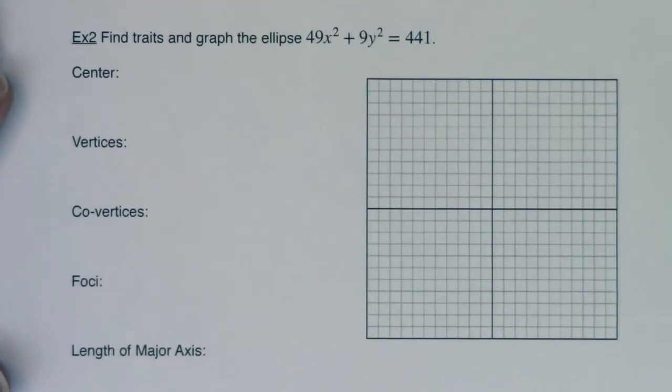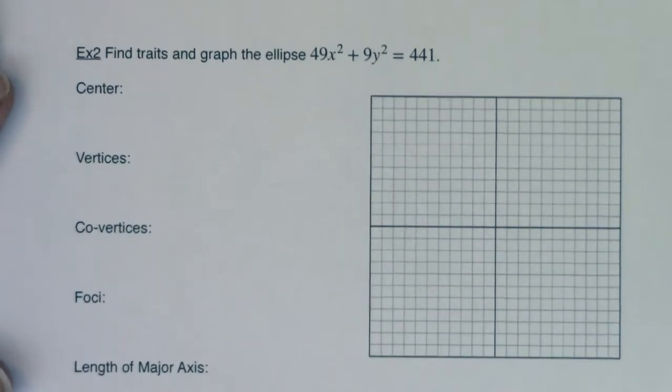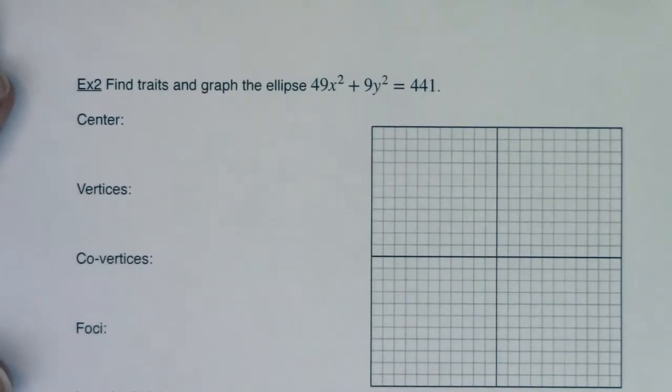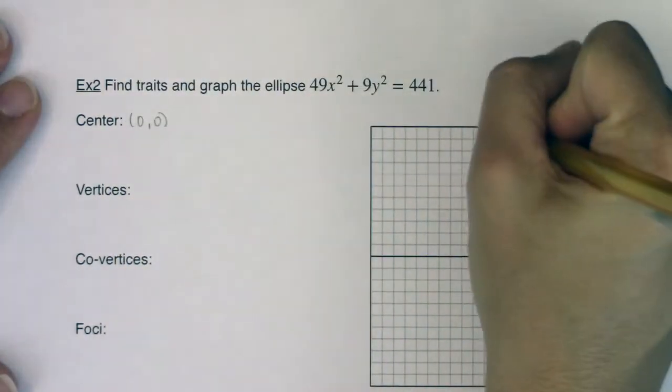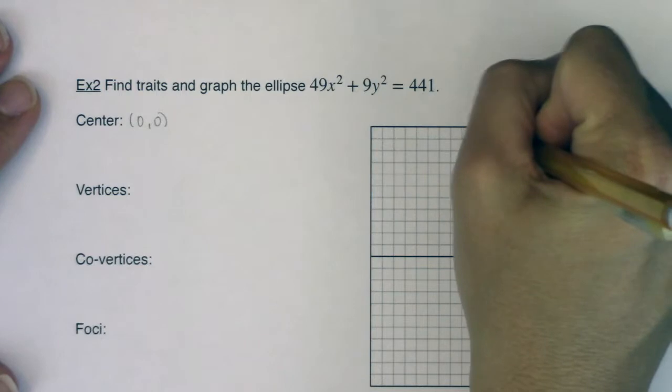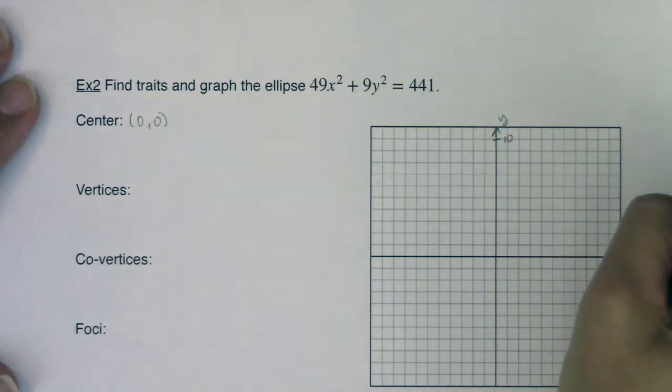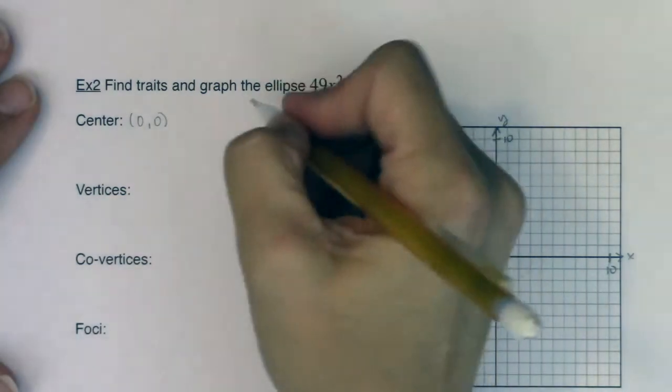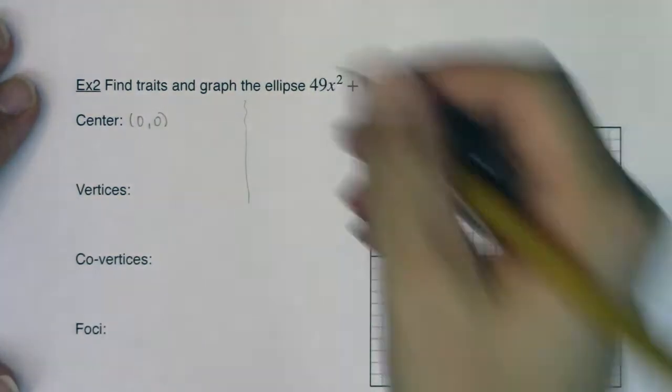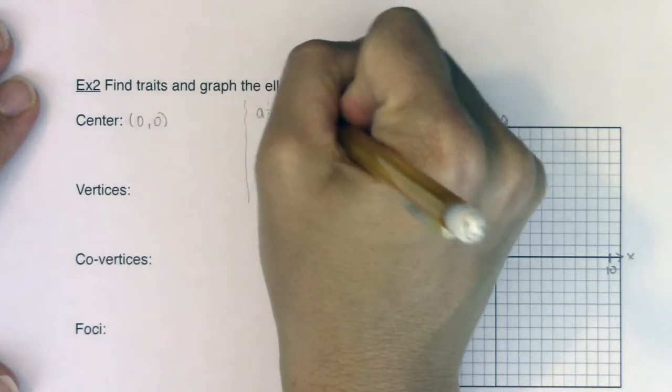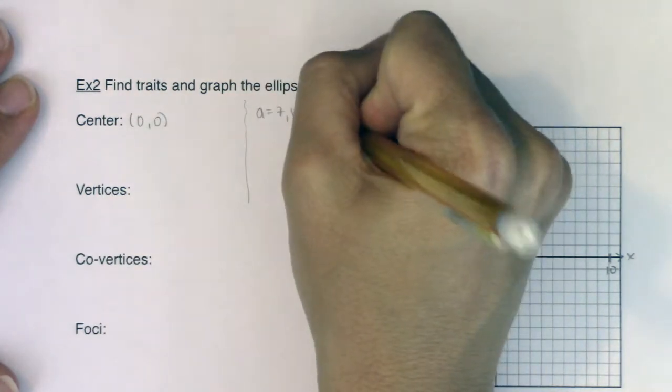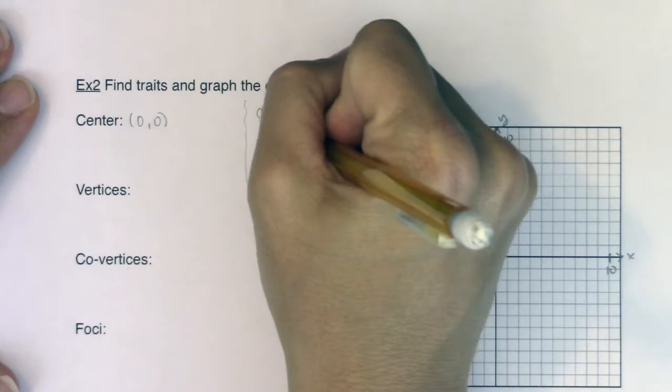So my center in this case is the origin. I'm going to label and scale the axes. My center was the origin. We knew a was 7, b was 3, and c was 2 root 10.